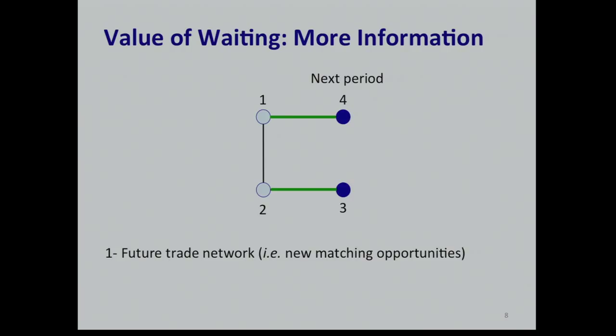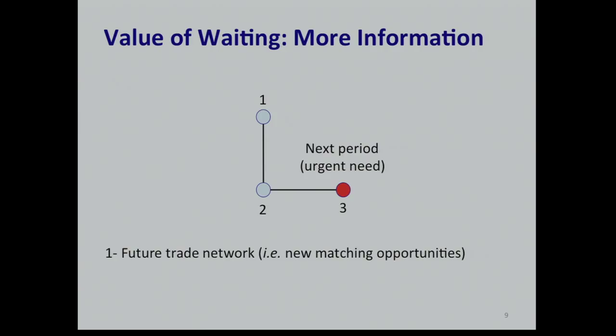There is a second type of information that can help, and that's why waiting can be valuable. Suppose I match one to two and they leave the market. In the next period, I get a signal that patient-donor pair three is in urgent need. If I had not matched one to two, I could save three by matching three to two — but two has already left the market. So information about agents' urgency of needs, or waiting costs, is going to be important information.